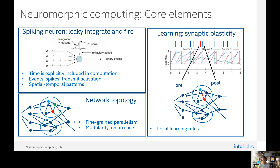These two properties describe a spiking neuron. Time is explicitly included in computation — it's really a temporal machine — and spikes transmit activation, defining special temporal patterns. Information is not encoded just in values; it's encoded in special temporal patterns of spikes across neurons.